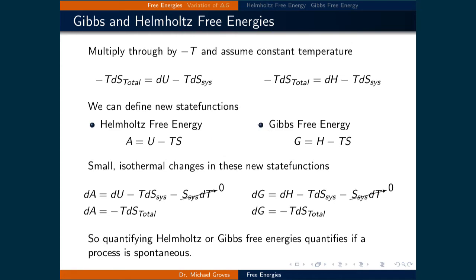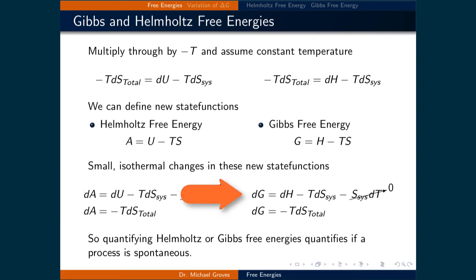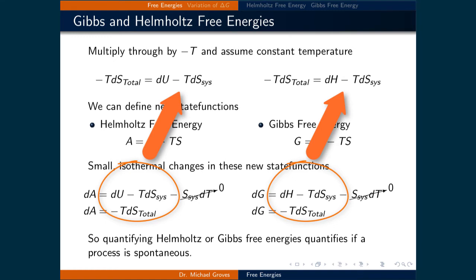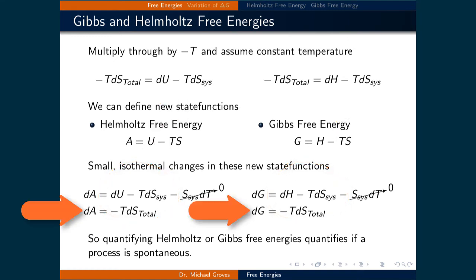If we calculate small isothermal changes in these new state functions, starting with the Helmholtz free energy, we get the infinitesimal change of the free energy minus T times dS_system minus the entropy of the system times dT. The two terms with temperature and entropy arise from applying the product rule. For the Gibbs free energy, we get the infinitesimal change in the enthalpy minus T dS_system minus S_system times dT. In both cases, the S_system times dT term goes to zero because this is an isothermal process, so there aren't any small changes in temperature. This means that for both the Helmholtz and Gibbs free energy, the infinitesimal change is equal to the negative of the total entropy change for the system. Therefore, quantifying Helmholtz or Gibbs free energies quantifies if a process is spontaneous.